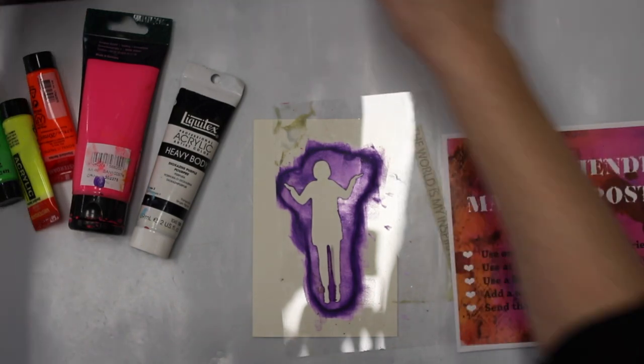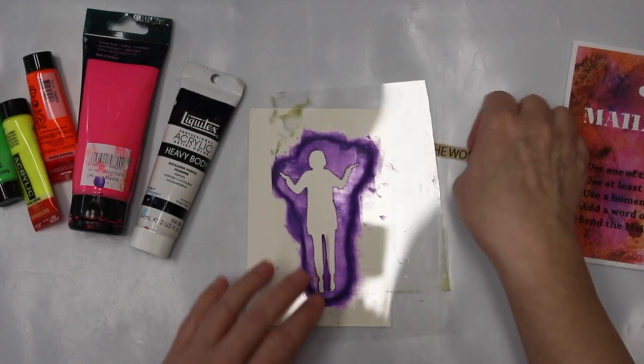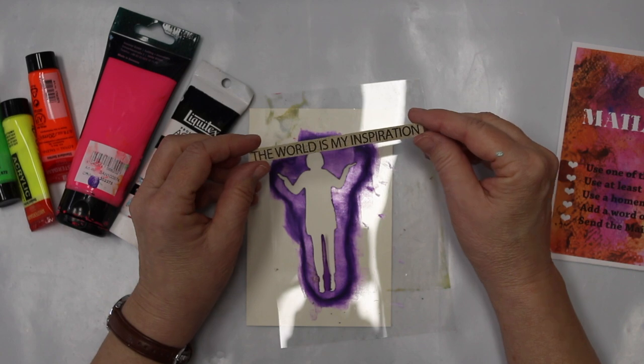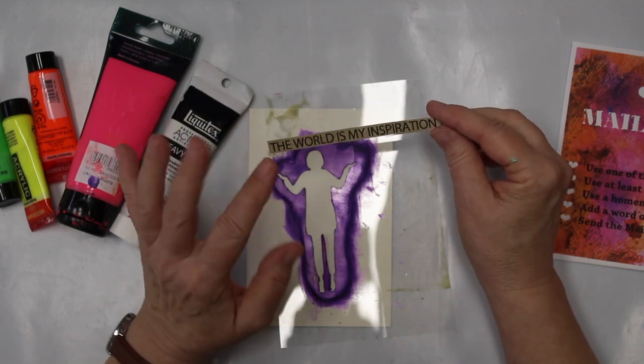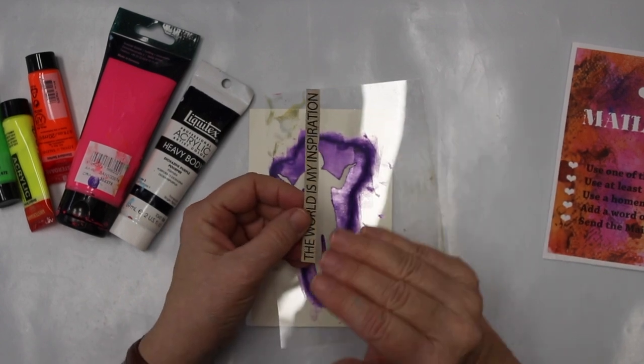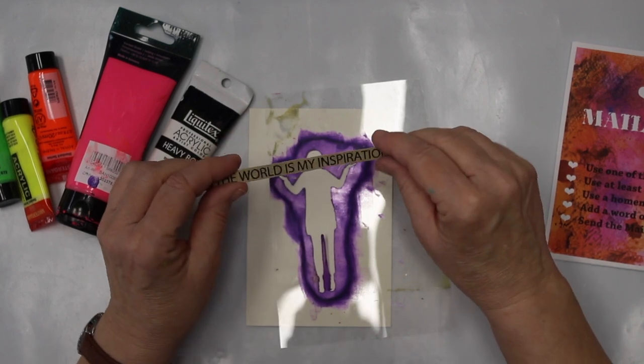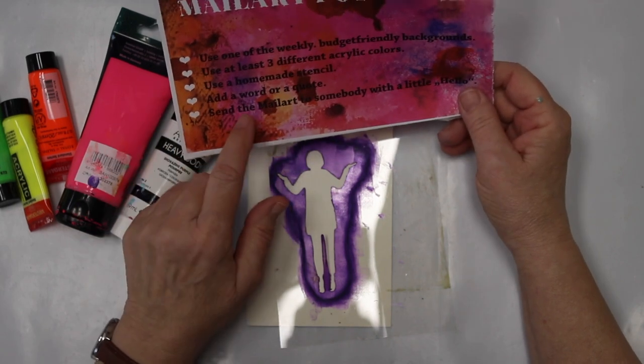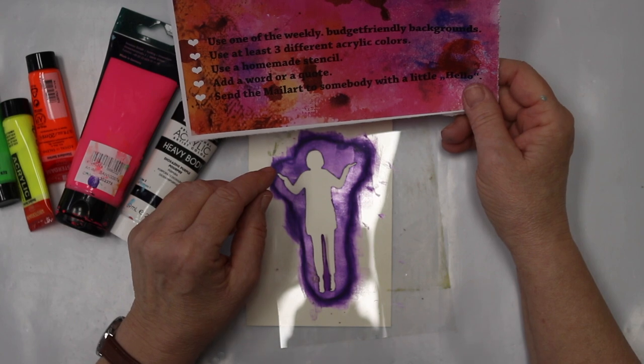So that's what I'm gonna use as a stencil. Then add a word or a quote, and it's gonna be 'The world is my inspiration.' That's actually from Canvas Corp brand. They package their products with words and pictures on it, so you can use even the packaging, which I think is a neat idea. And then, as usual, the fifth point, the fifth prompt, is send the mail art to somebody with a little hello.